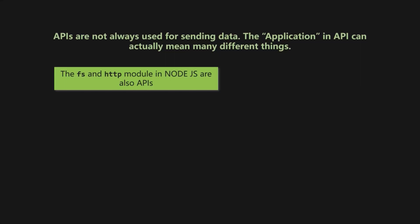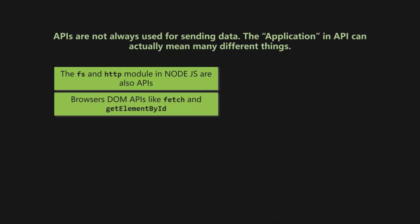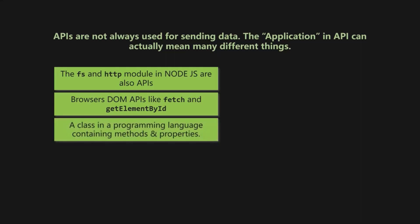Another example of an API would be the APIs provided by browsers, such as the fetch API or the getElementById method. When we manipulate the DOM in the browser, we are not using methods provided by JavaScript itself — we use the DOM APIs which the browser exposes to us, and these are also called APIs. Similarly, when we define properties and methods in a class and create an object to access them, those methods can also be considered an API. So keep in mind that API does not always mean Web APIs — it can mean many different things.